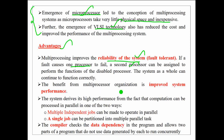The second notable benefit of a multiprocessing system is to achieve high performance. This high performance is achieved by processing the computation in parallel in one of the following two ways. The first way is that multiple independent jobs can be made to operate in parallel by multiple processors. The second way is that a single job can be partitioned into multiple parallel tasks so that the job can be solved very quickly by multiple processors. In this case, when a single job is partitioned into multiple parallel tasks, data dependency has to be checked between the partitioned tasks.